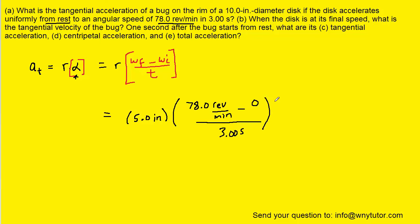As noted, inches is a non-standard unit, so we're going to have to convert that into meters. It turns out that one meter is approximately 39.37 inches. If we set up the conversion factor in that manner, the inches in the numerator cancel with the inches in the denominator, giving us meters, which is a standard unit.